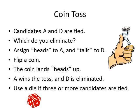Candidates A and D have the same number of votes, so we must toss a coin to determine which will remain in the race and which will be eliminated. The ballot counter assigns heads to A and tails to D, agrees that face up means the candidate will remain in the race, and then flips the coin. It lands heads up, so A remains in the race and D is eliminated. If three or more candidates are tied, you can use a die — assign a number to each candidate and roll the die; if an assigned number is rolled, that candidate is eliminated.